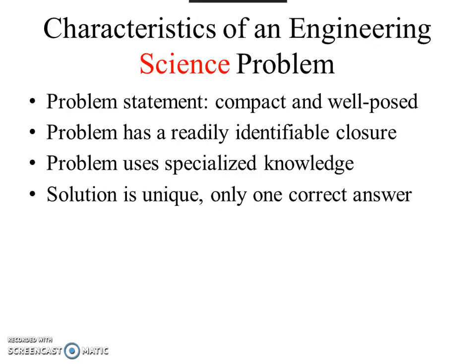The place to start is to describe the difference between the characteristics of an engineering science problem and an engineering design problem. Up until now you've been solving engineering science problems — problems where you're given a compact, well-posed, well-thought-out problem statement. The problem has a readily identifiable closure, meaning you can crank through some calculations and get to what seems like the end of the problem, with no need to iterate again once you've solved it the first time.